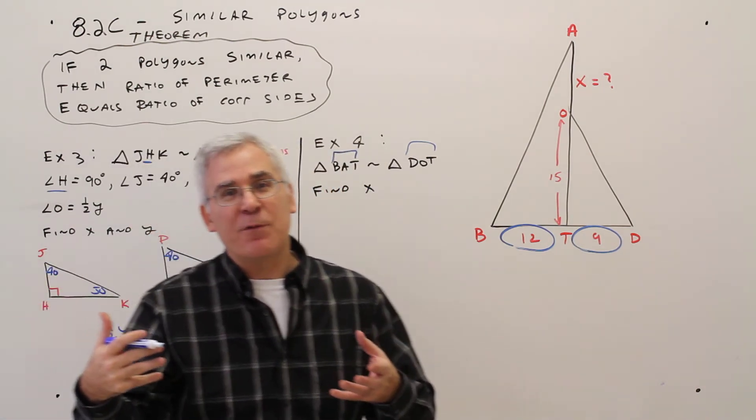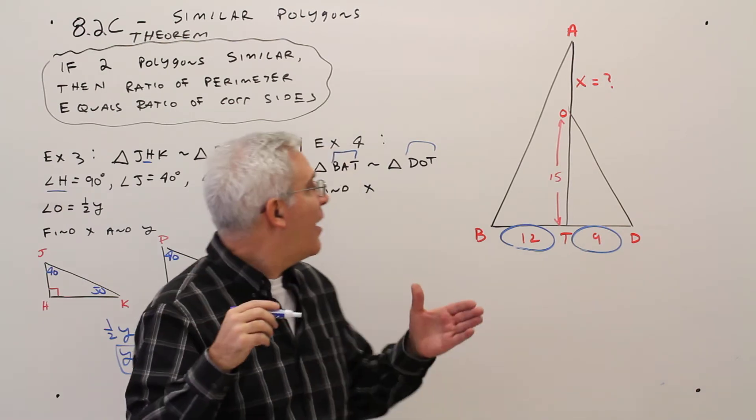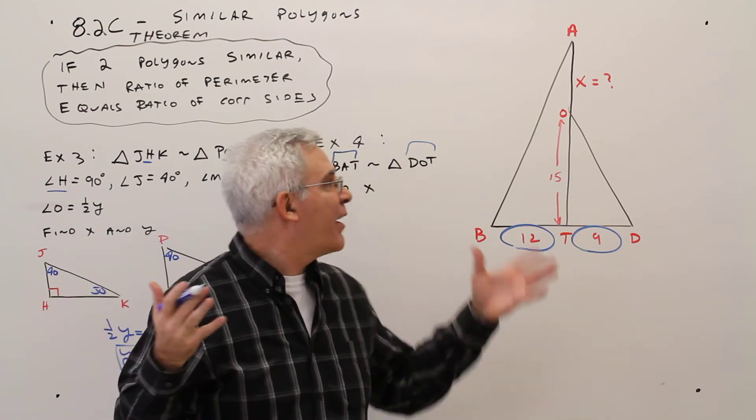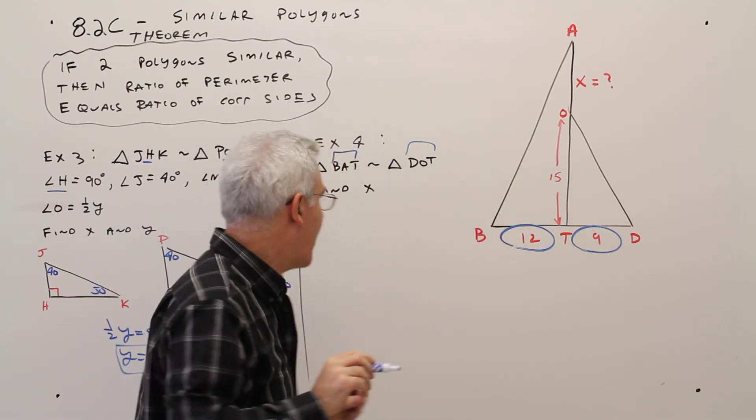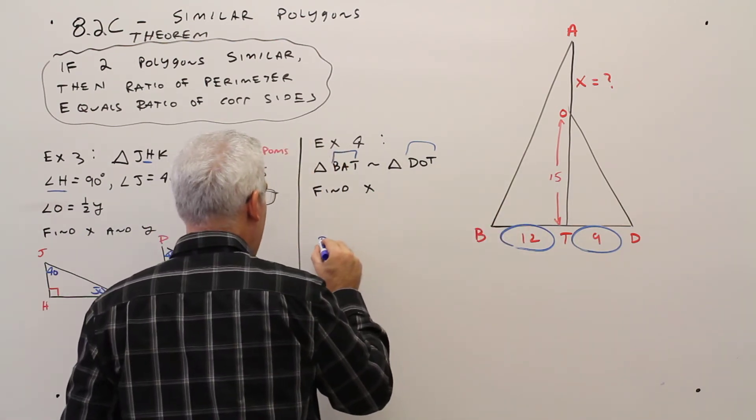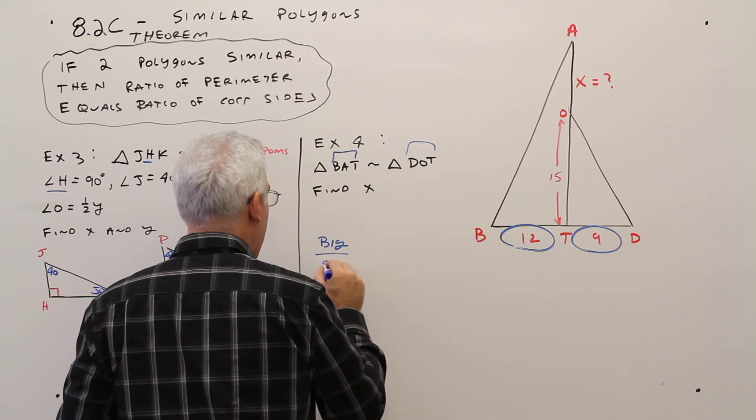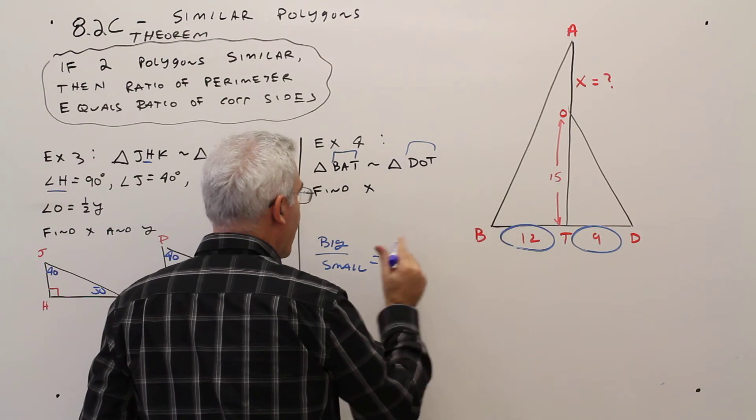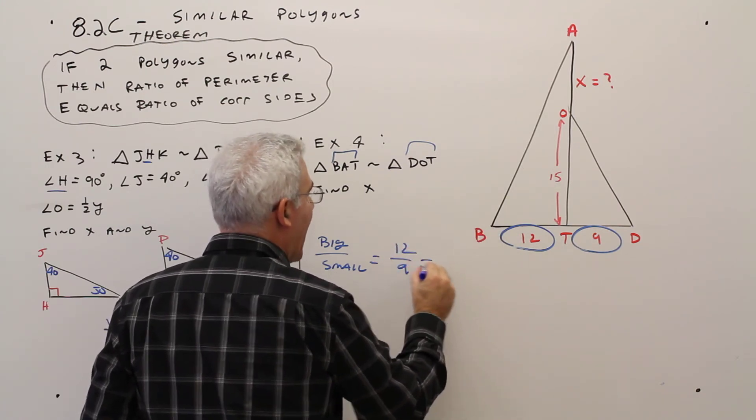Okay? And then, as I mentioned before, I like to be consistent. I could say either left stuff over right stuff, or I could say big over small. I'll just go big over small. To me, that's an easy way of looking at things. So I'll say big over small. This is part of the big guy. 12 over 9.